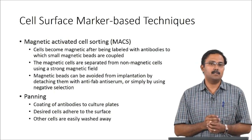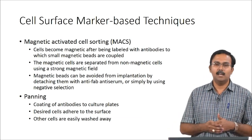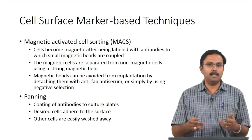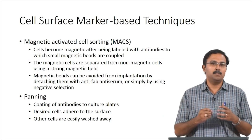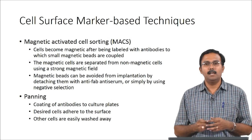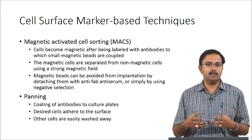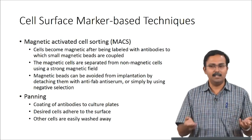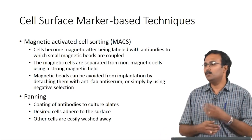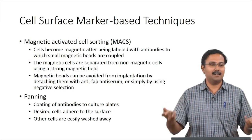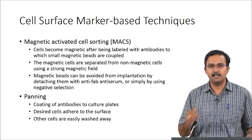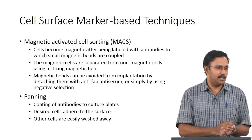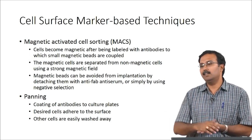Other surface marker-based techniques include magnetic-activated cell sorting (MACS) and panning. In MACS, cells are made magnetic by attaching labeled antibodies coupled to magnetic beads, and the magnetic cells are separated from non-magnetic cells using a strong magnetic field. The magnetic beads can be detached using anti-serums, or negative selection can be used to avoid tagging desired cells. Panning is a simpler technique where antibodies are coated onto culture plates; only the desired cells adhere and other cells are easily washed away.